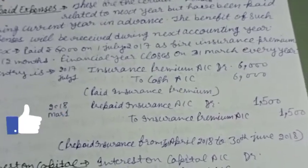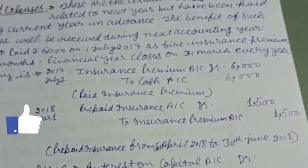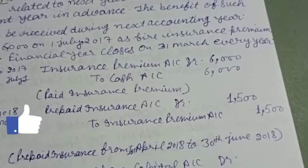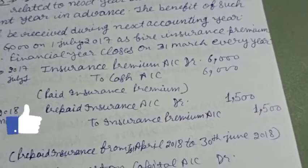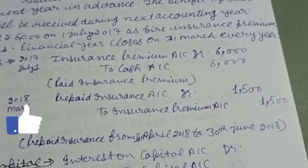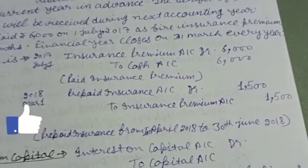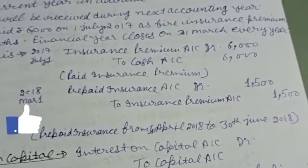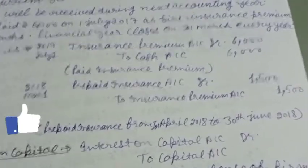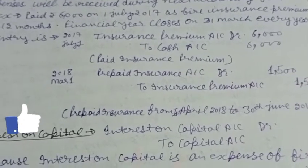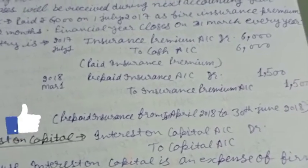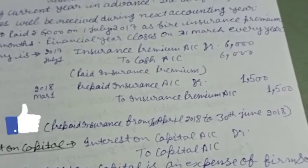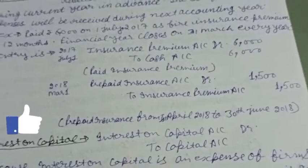On 31st March 2018 the entry will be: Prepaid Insurance Account debit to Insurance Premium Account one thousand five hundred — insurance premium from 1st April 2018 to 30th June 2018. The six thousand premium was paid on 1st July 2017, but accounts close on 31st March 2018 — so nine months' premium belongs to the current year, and the remaining three months' premium of one thousand five hundred belongs to the next year.